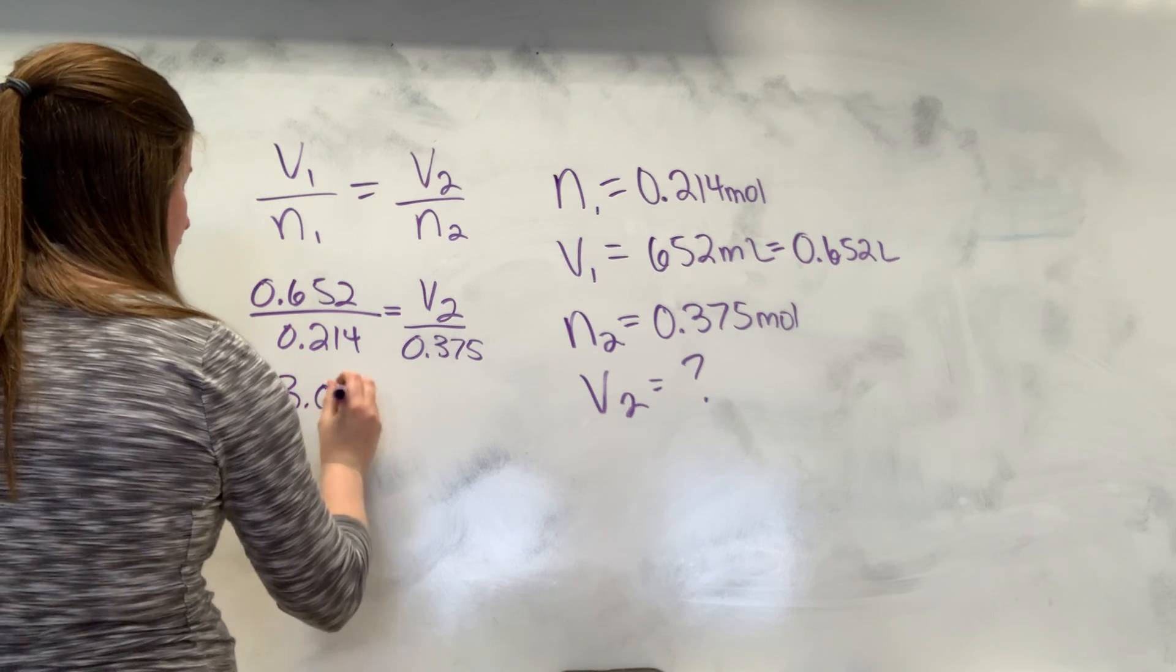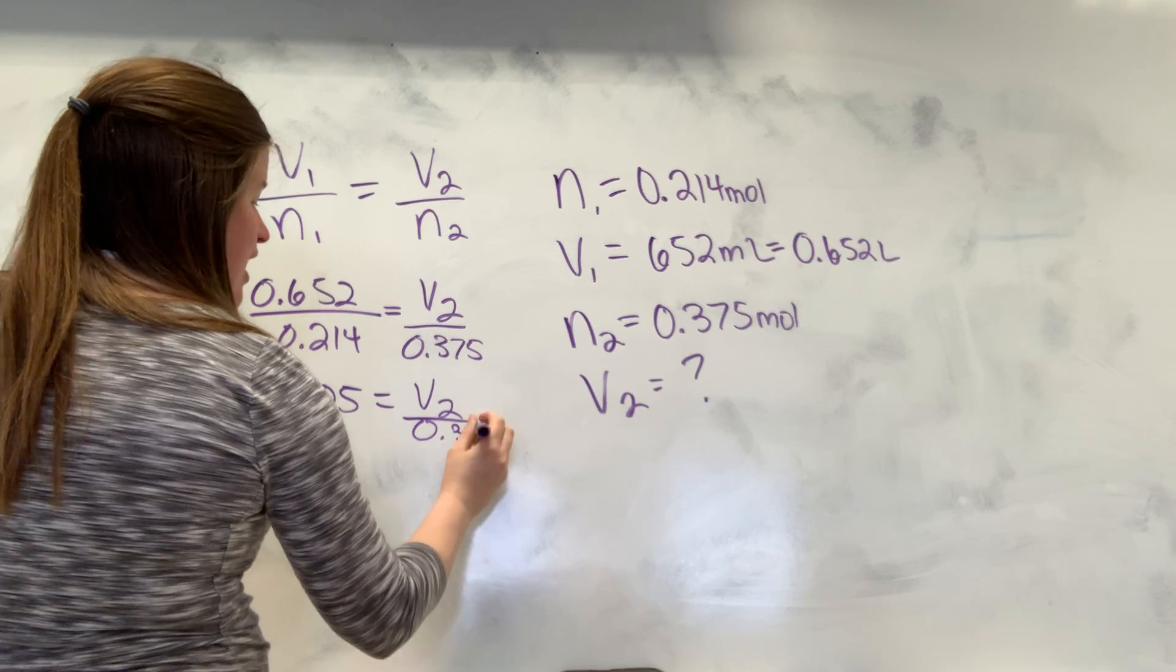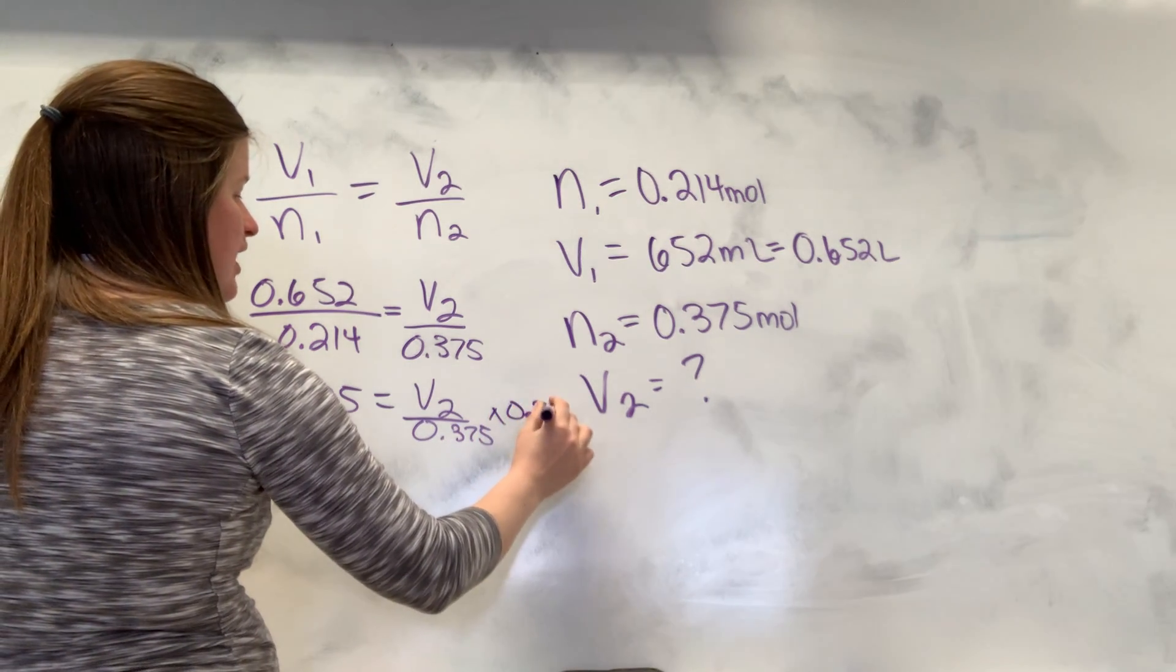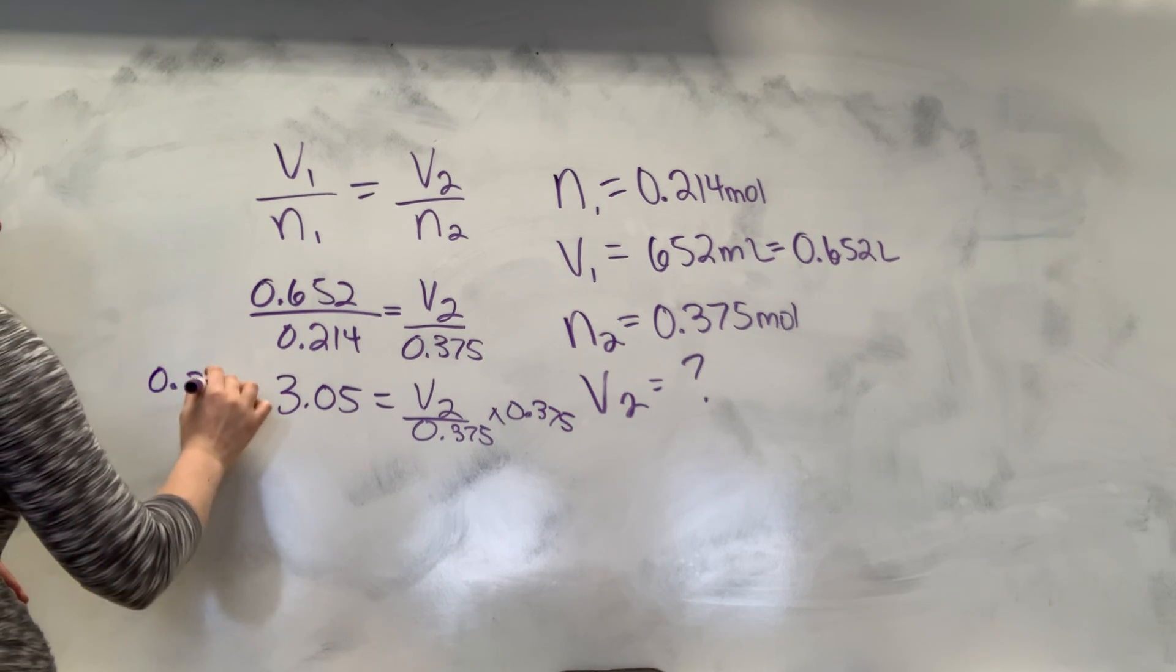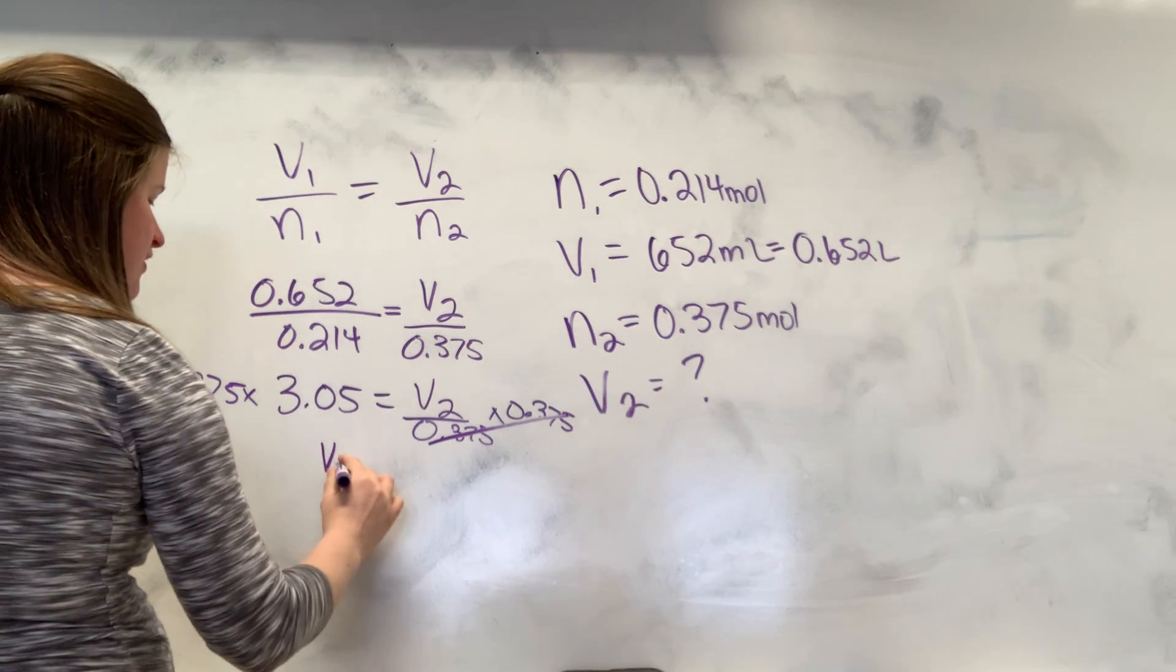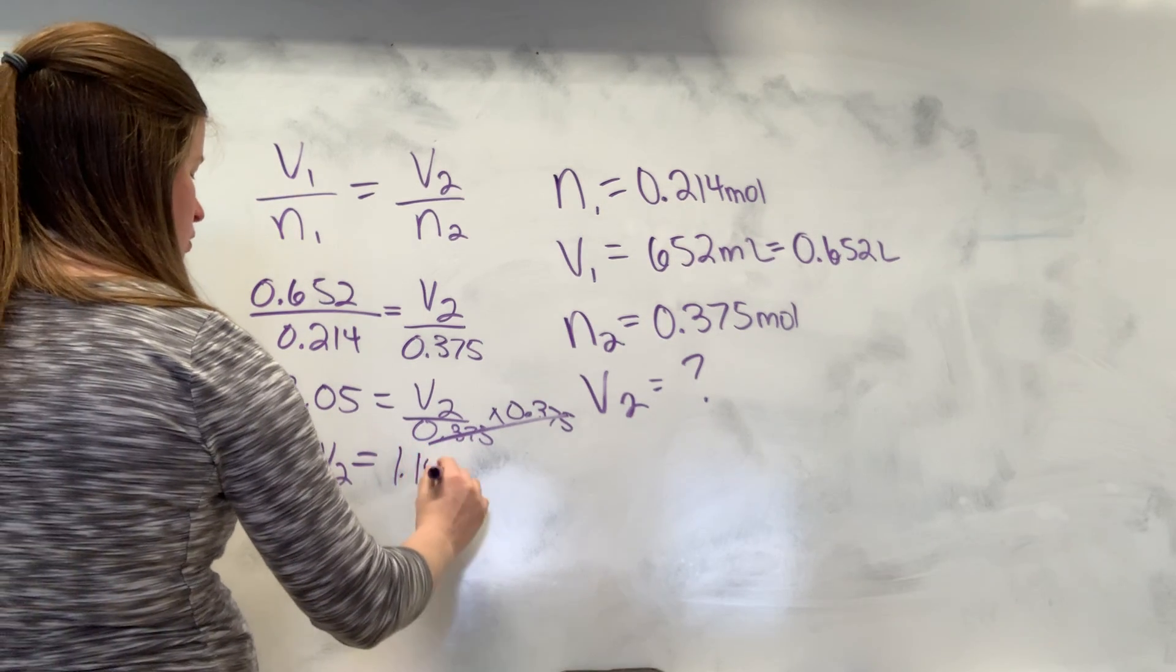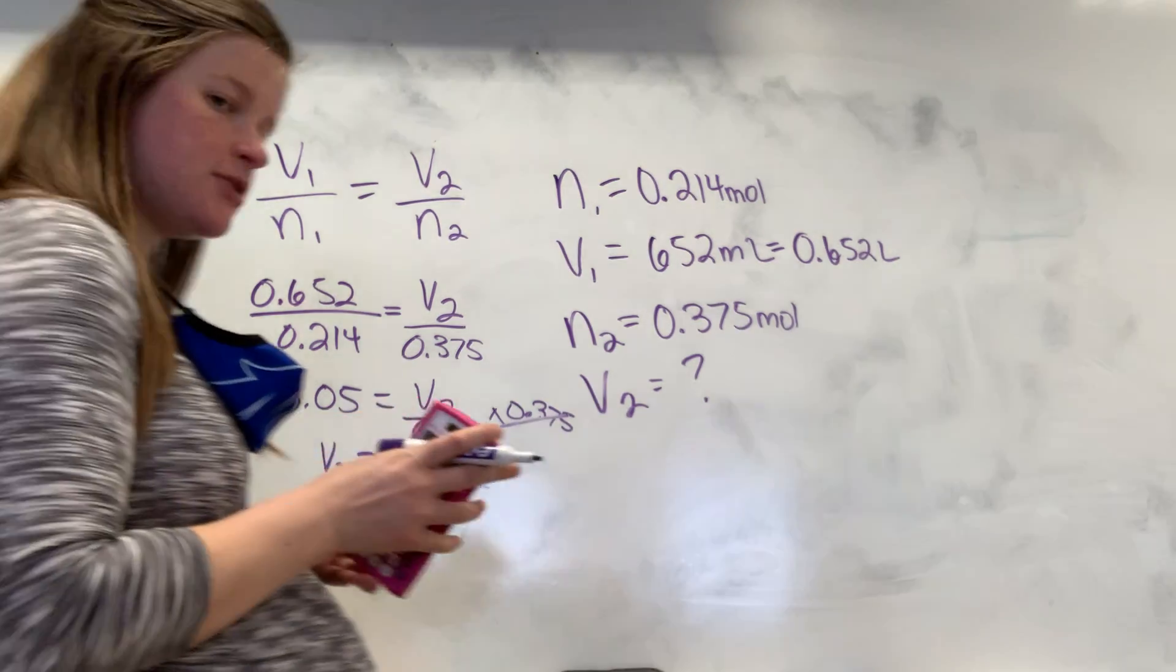So 3.05 is equal to V2 over 0.375. I want to get V by itself. So to undo division, I'm going to multiply. Whatever I do to one side, I do the other. So I'm going to multiply both sides by 0.375. Because when I do that, this cancels. So I get V2 is equal to roughly, and so when we do this times 0.375, 1.14. And that would be liters, 1.14 liters.